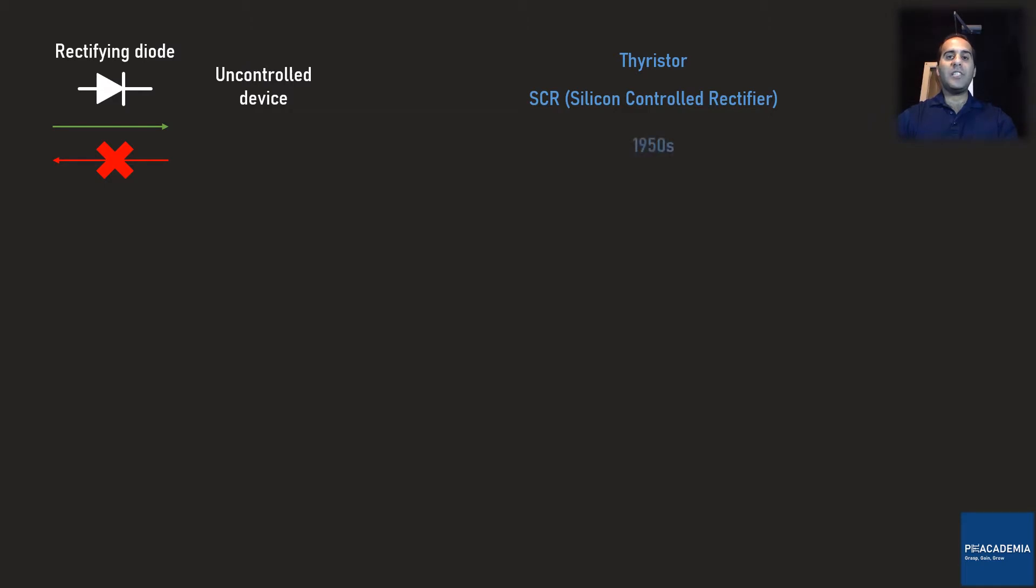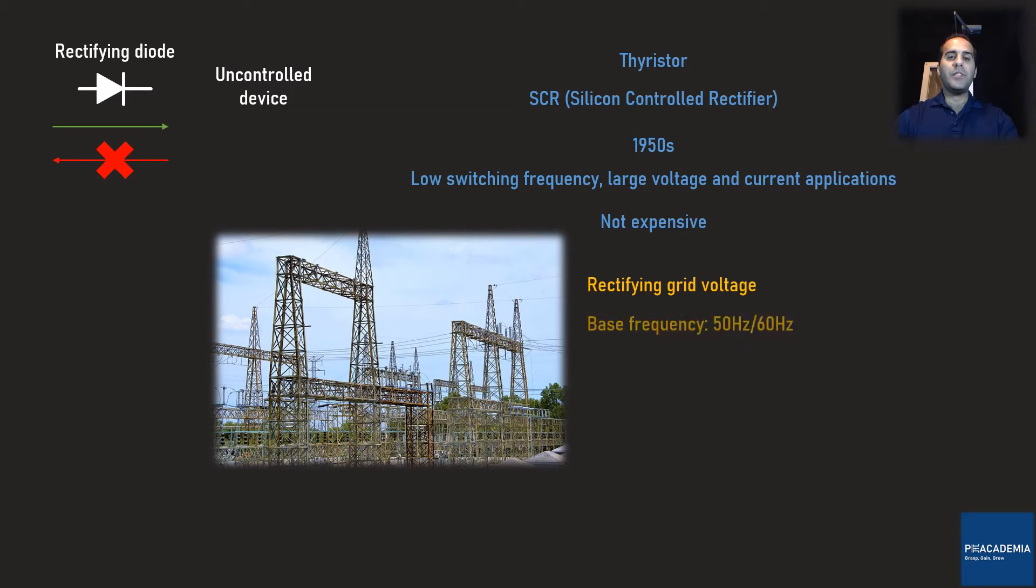Thyristors have been around since 1950s and these days are used in low switching frequency and high voltage power applications. The technology to build a thyristor is not that advanced and it can be fabricated with not very fine structures. As a result, they are relatively not costly. Thyristors are mostly used for rectifying the grid voltage where the base frequency is 50 Hz or 60 Hz or in applications that the power range of other devices cannot reach. To bring the power rating into perspective, just imagine that the thyristor can have a blocking voltage of 8 kV and a current rating of 5.6 kA.